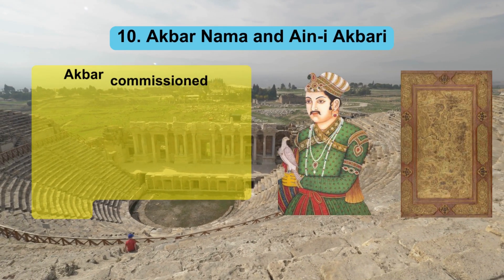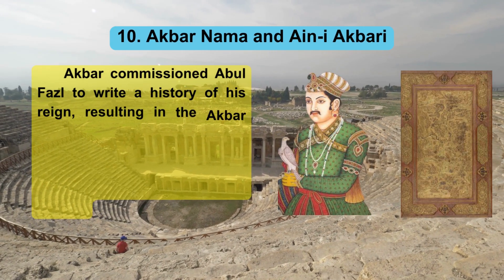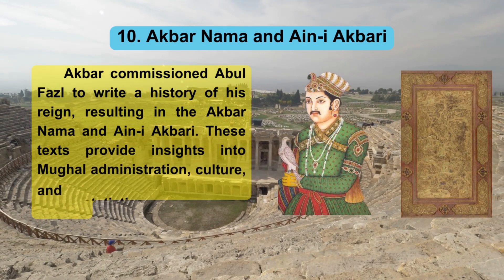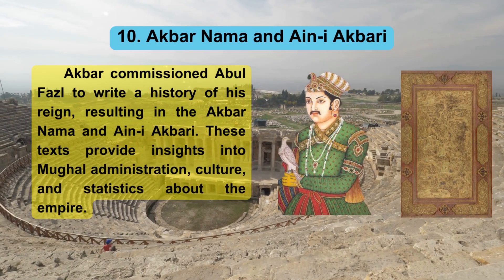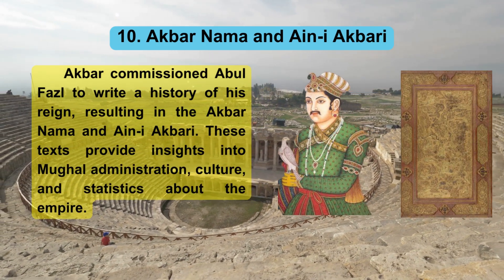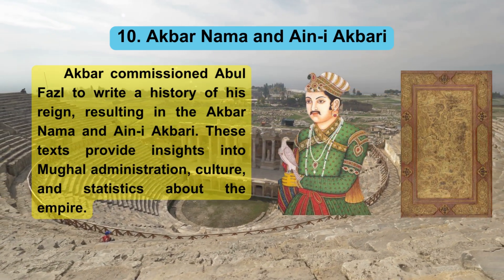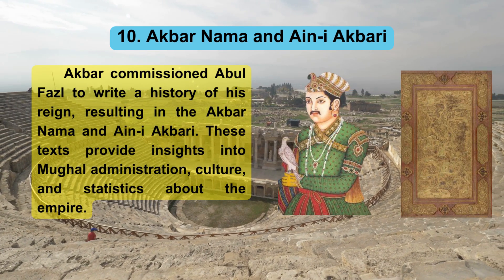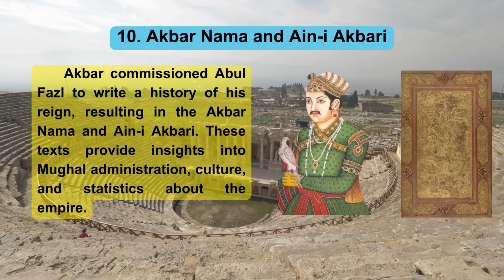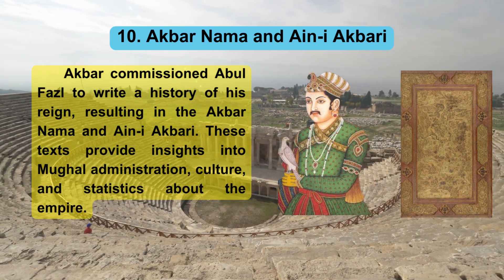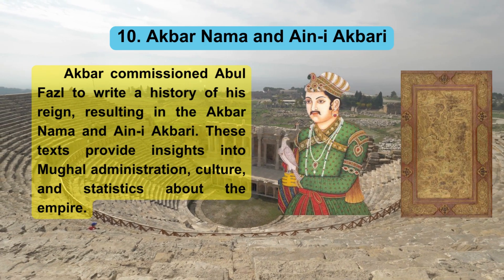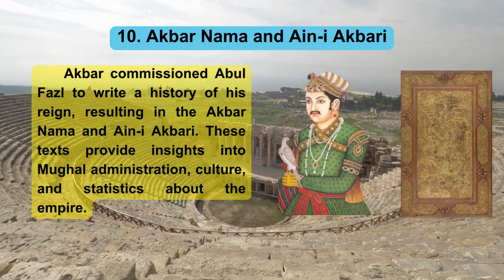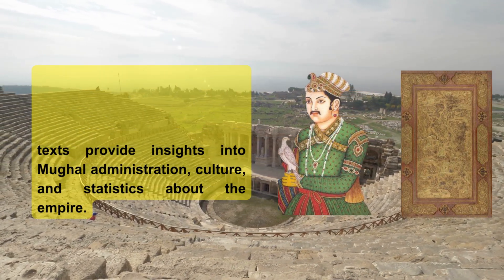10. Akbar Nama and Ain-i-Akbari. Akbar commissioned Abul Fazal to write a history of his reign, resulting in the Akbar Nama and Ain-i-Akbari. These texts provide insights into Mughal administration, culture, and statistics about the empire.